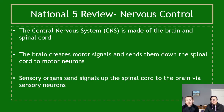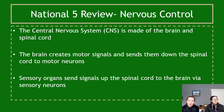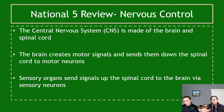In terms of what you learned at Nat 5, the brain and nervous system came up briefly but wasn't covered in great detail. You learned about the central nervous system — made up of the brain and spinal cord — and that the rest is just 'other nerves.' You also learned that the brain creates motor signals and sends them down the spinal cord to motor neurons, and that sensory organs send signals up via sensory neurons.